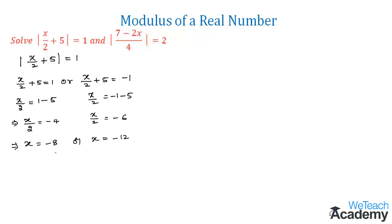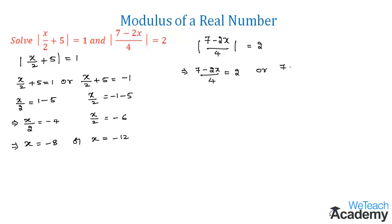Now let us solve the second equation: mod((7 - 2x)/4) = 2. This gives two cases: (7 - 2x)/4 = 2, or (7 - 2x)/4 = -2.